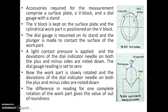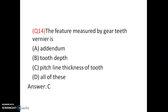For measuring roundness, 60-degree and 90-degree V-blocks are used, checked on both. The feature measured by gear tooth vernier is pitch line thickness of the tooth. Gear tooth vernier is used to measure the pitch line thickness of the tooth.